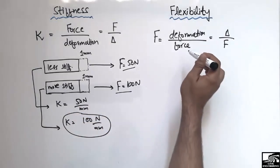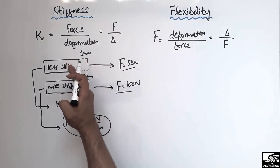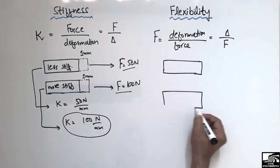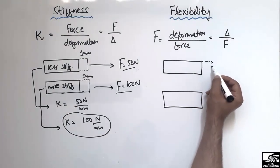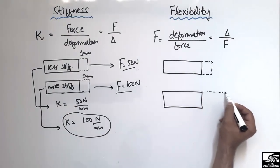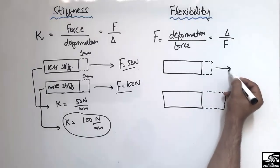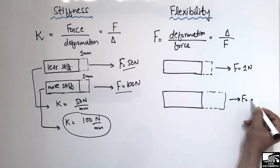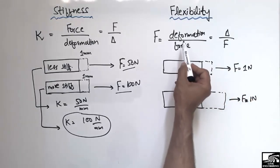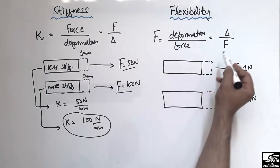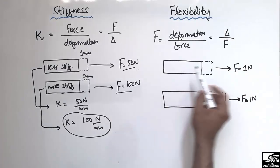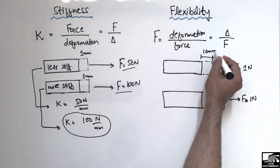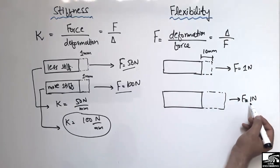Now, what is flexibility? Flexibility is exactly the opposite of stiffness. Let's consider two objects and apply a unit force of one newton to each, because flexibility is the ratio of deformation over unit force. We apply a force of one newton to the first object and observe its deformation.